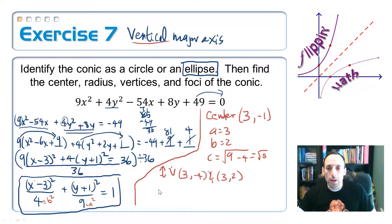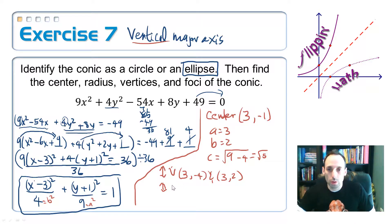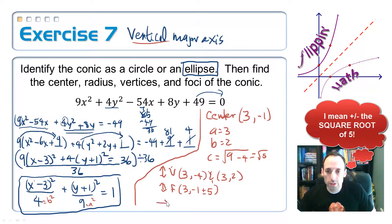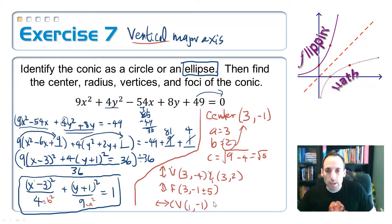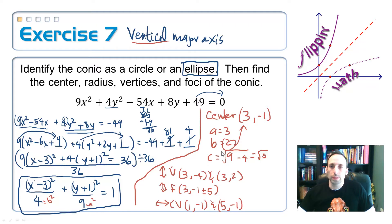The foci are also up and down along the y-coordinates: (3, −1 ± √5). The co-vertices go left and right, associated with the x-coordinates — taking b = 2 and adding and subtracting from the x-coordinate of 3: co-vertices at (1, −1) and (5, −1). And there's all the information we can get from that equation.